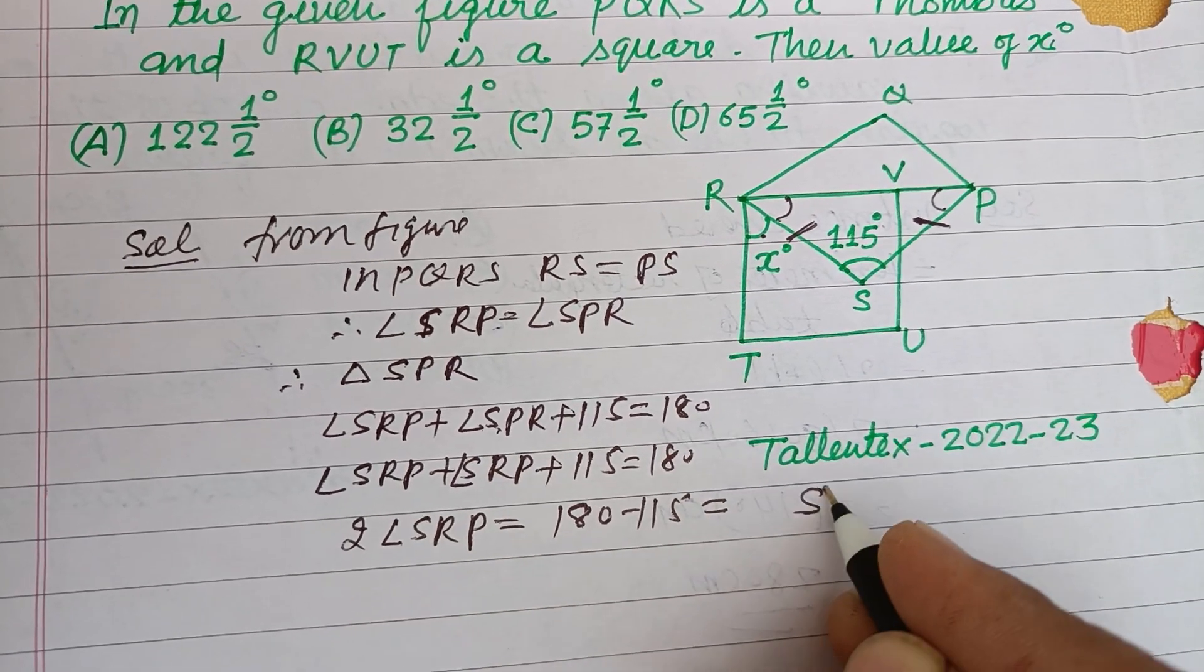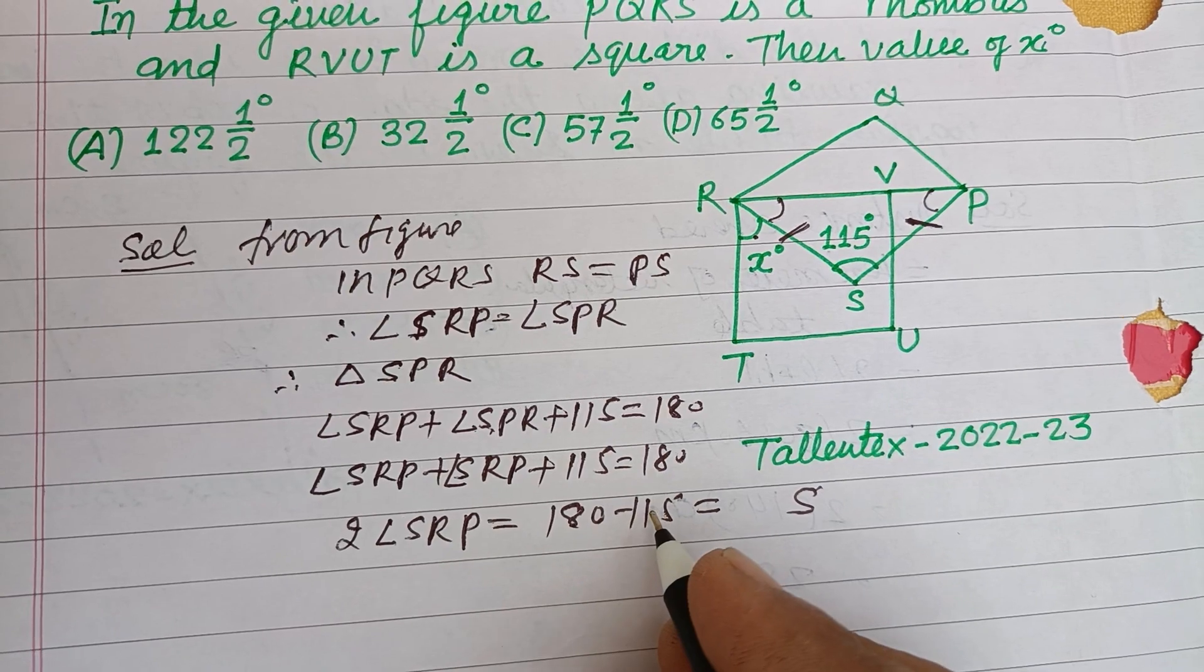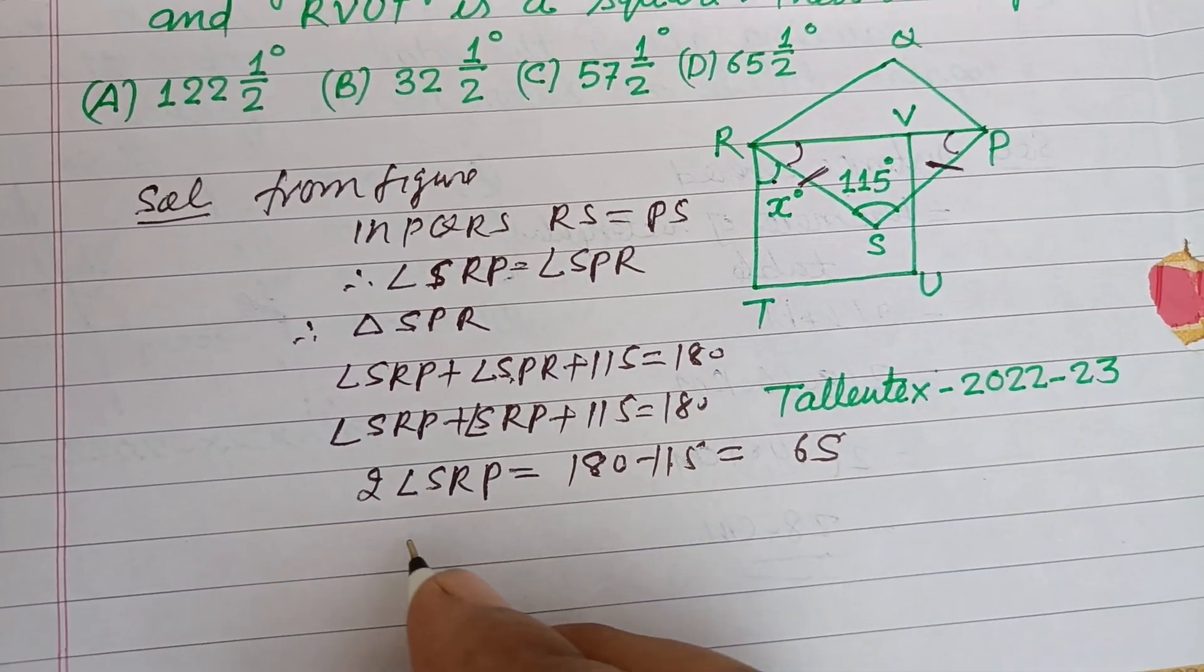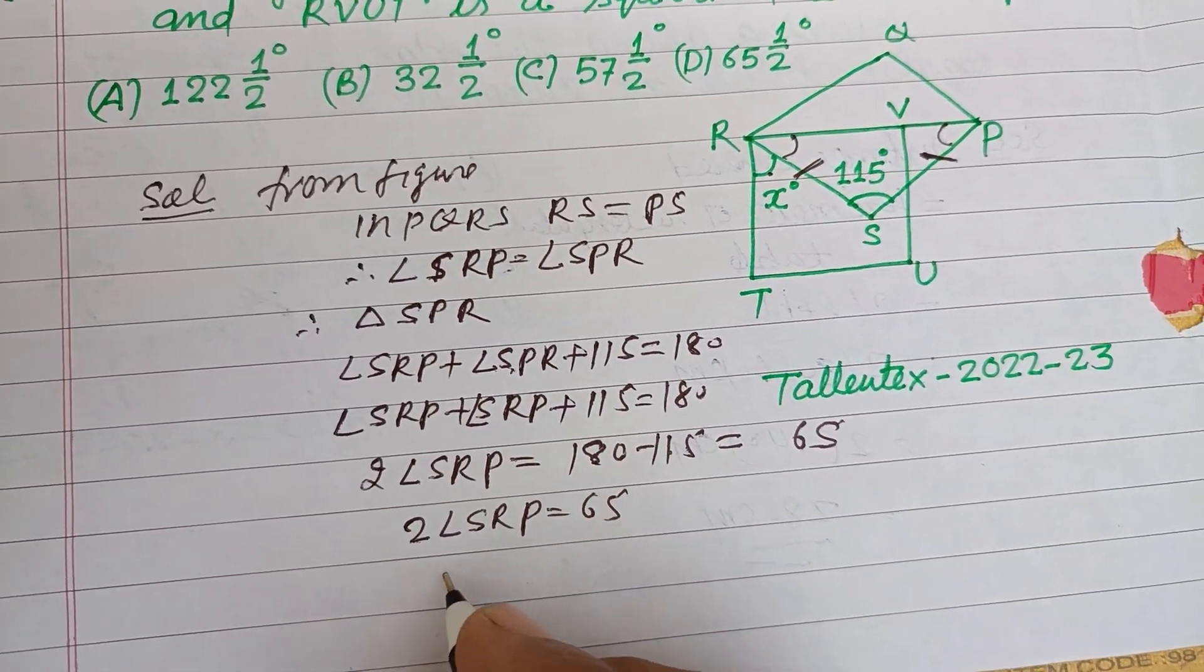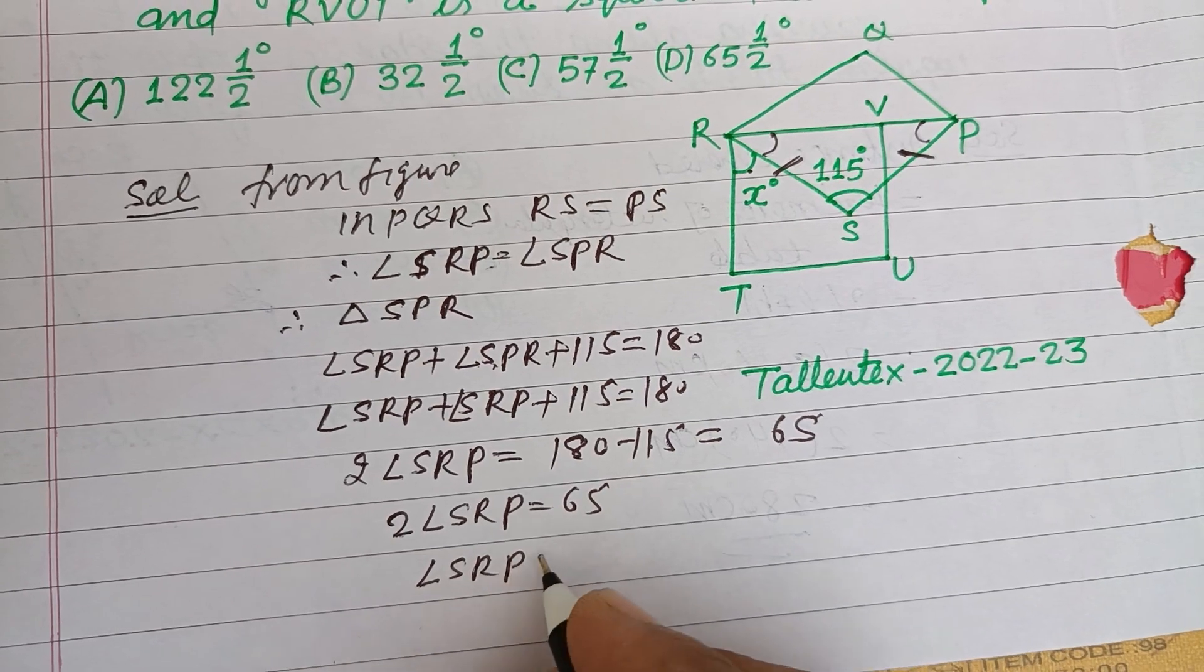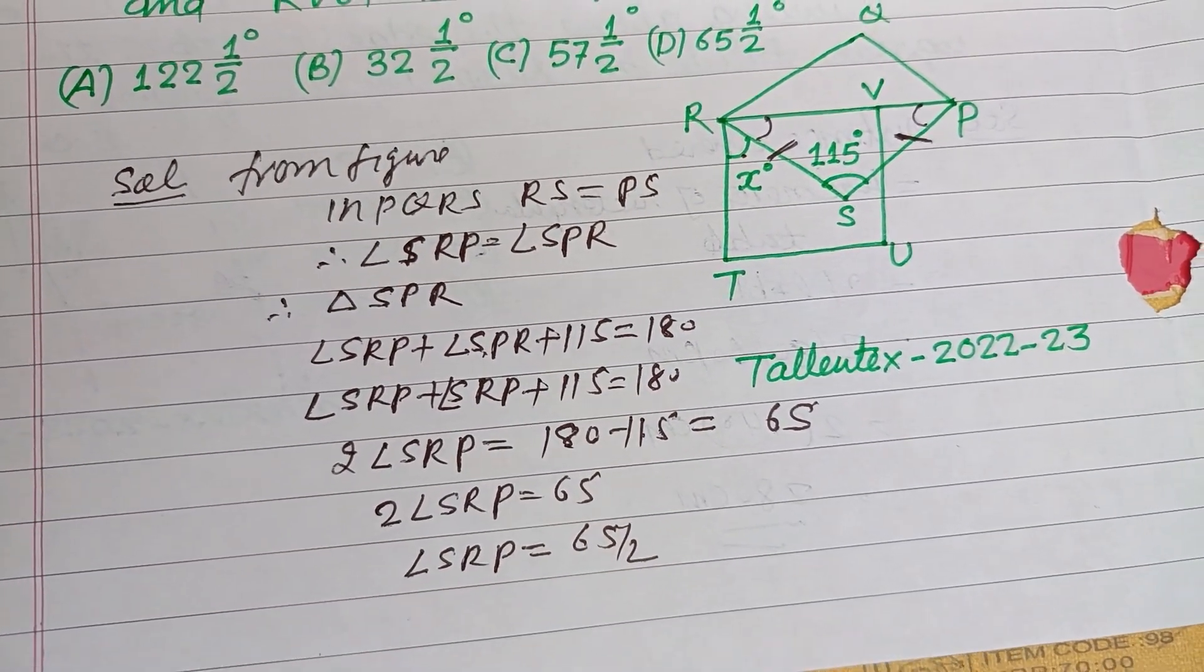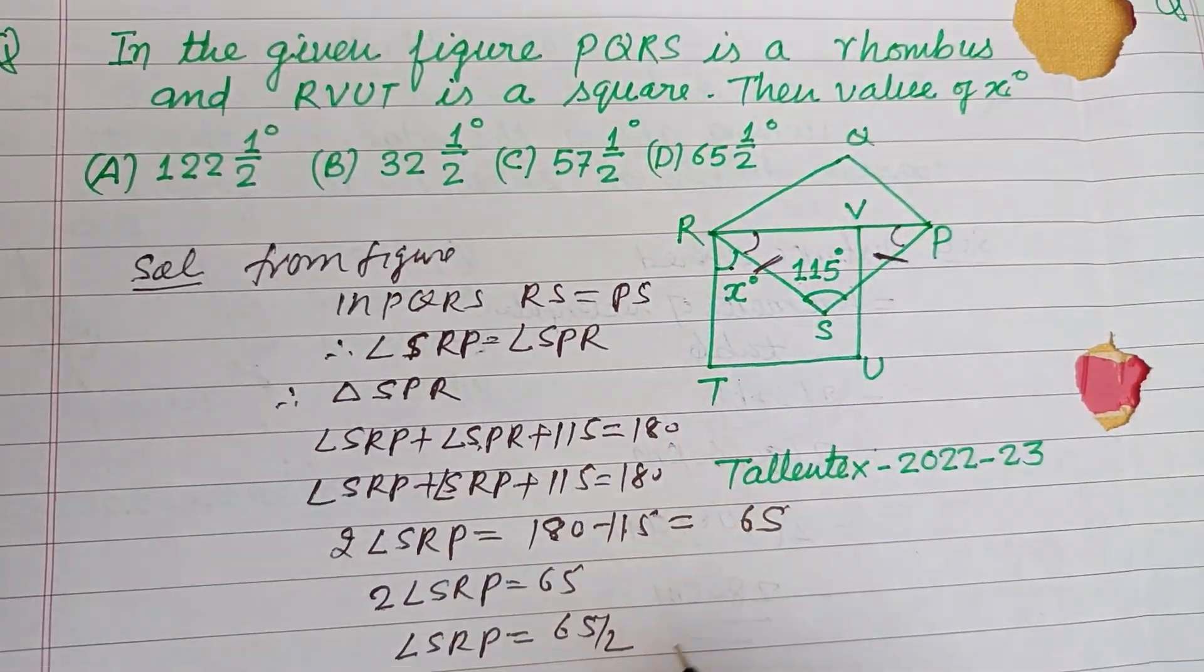So 2 angle SRP equals 65, and angle SRP equals 65 divided by 2.